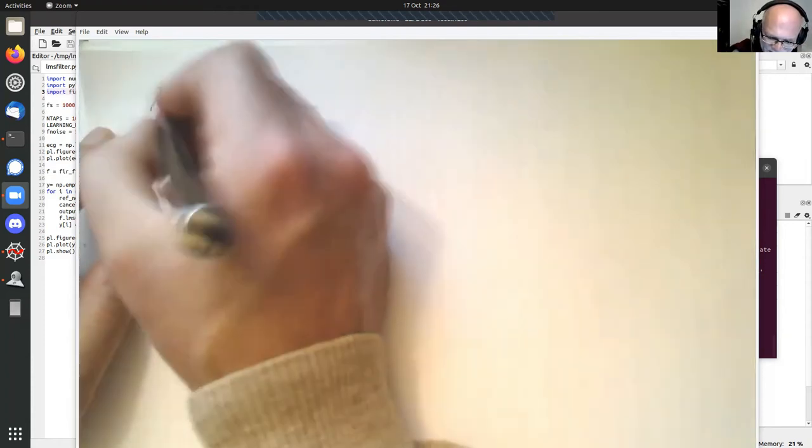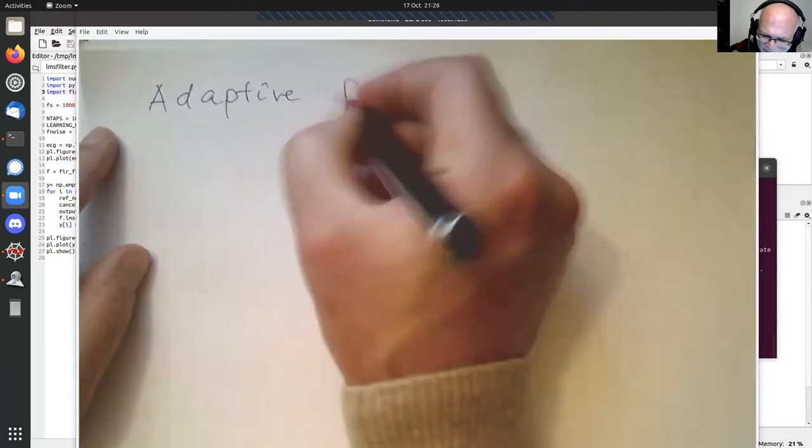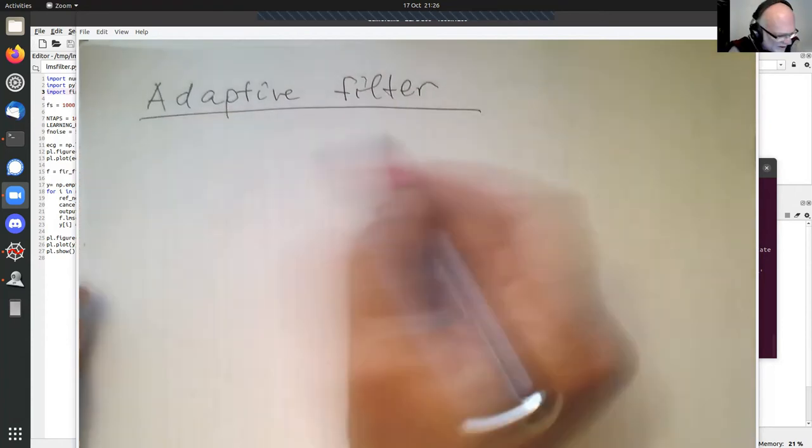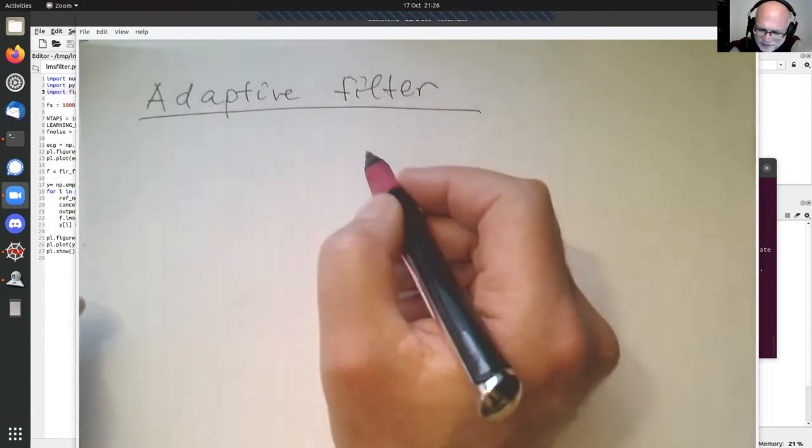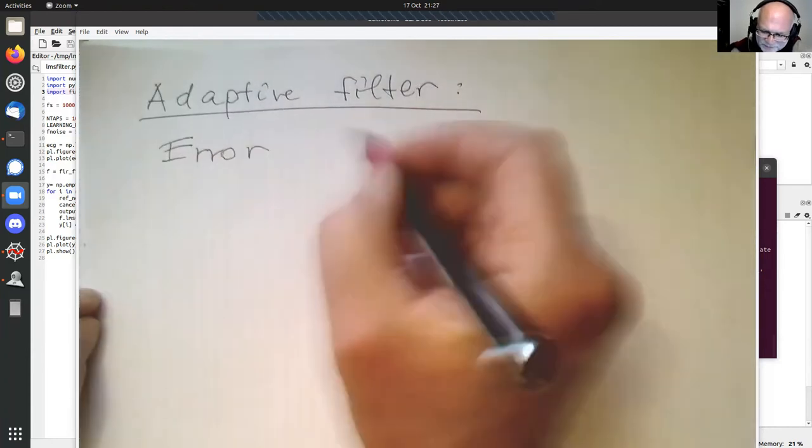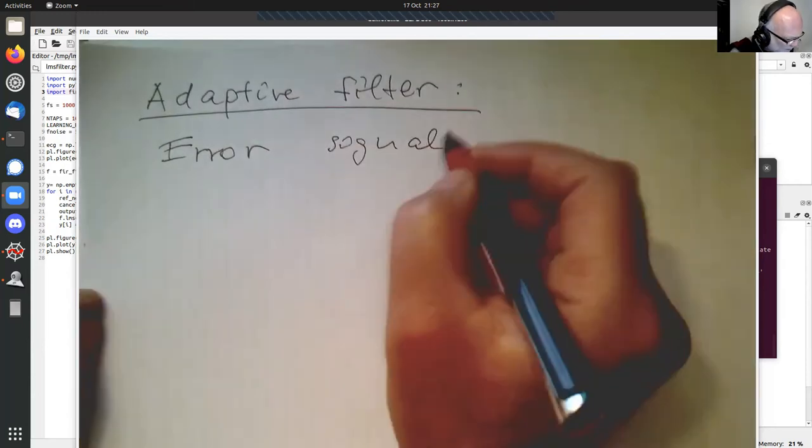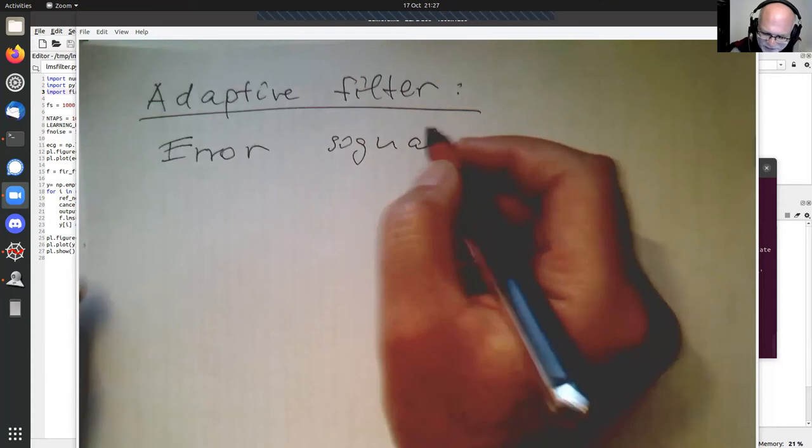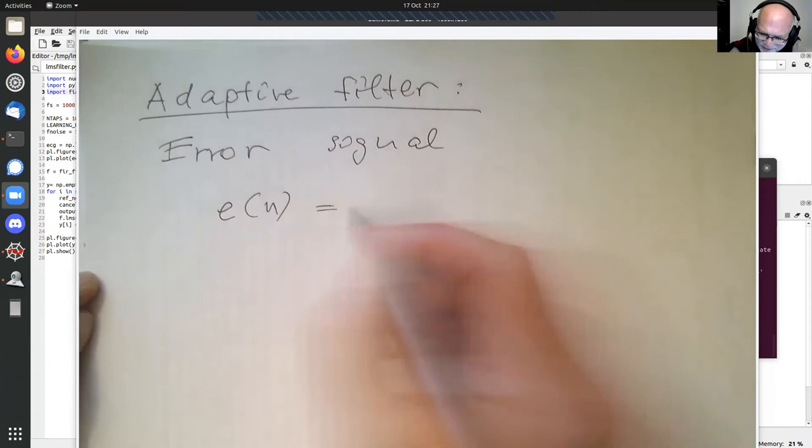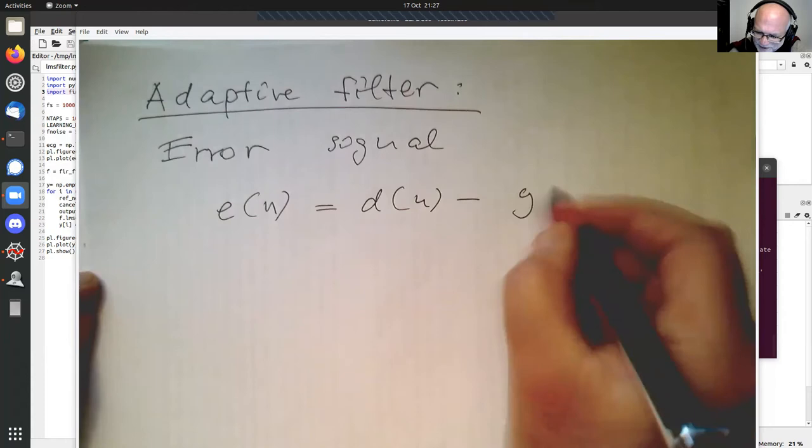So let's continue with adaptive filter and introduce an error signal. E of N, which is an error signal between the desired state and Y of N, which is the output.